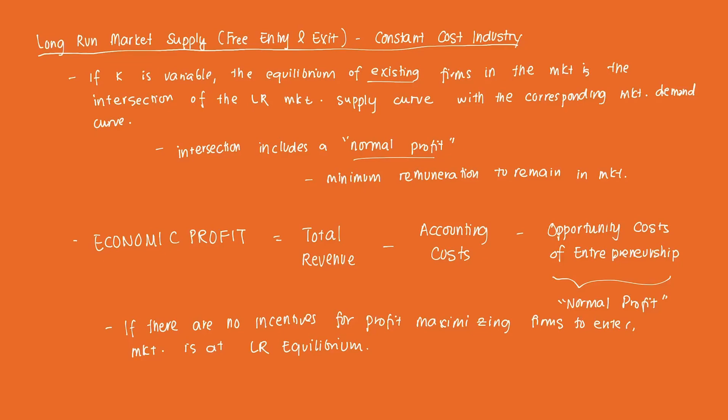In this video, we're going to formalize our discussion on long-run equilibrium by doing the derivation for the long-run market supply when there is entry and exit. This leads into our discussion on long-run competitive equilibrium. In the last video, we derived the long-run market supply when there was no entry and exit. Now we're going to extend our assumptions to long-run market supply when there is free entry and exit, starting with the case of a constant cost industry.